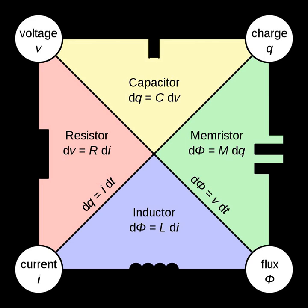Circuits with only linear elements, called linear circuits, do not cause intermodulation distortion, and can be easily analyzed with powerful mathematical techniques such as the Laplace transform. Nonlinear elements are elements in which the relation between voltage and current is a nonlinear function. An example is a diode, in which the current is an exponential function of the voltage. Circuits with nonlinear elements are harder to analyze and design, often requiring circuit simulation computer programs such as SPICE.